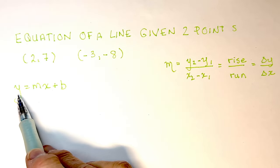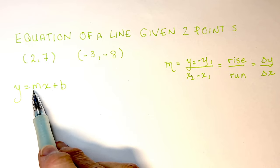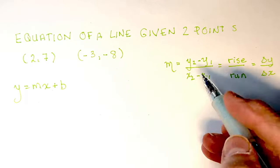We know the equation of a line in slope y-intercept form is y equals mx plus b. The slope equation,